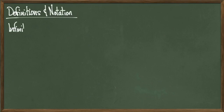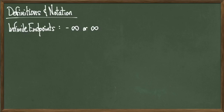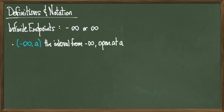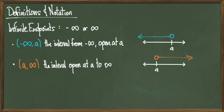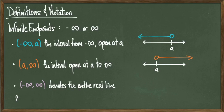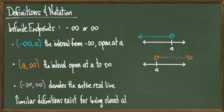Now let's talk about what to do when our endpoints are infinite — that is, when we have an endpoint of negative or positive infinity. Such endpoints always carry an open parenthesis because infinity is not a number, so it cannot be included in a set. The open interval from negative infinity to a real number a, written (-∞, a), describes all numbers less than a; on the number line it's an open circle over a with an arrow pointing left. The interval (a, +∞) starts at a and goes to positive infinity, drawn with an open circle over a and an arrow pointing right. The notation (-∞, +∞) means the entire real line. Similar definitions exist for half-open intervals with infinite endpoints.